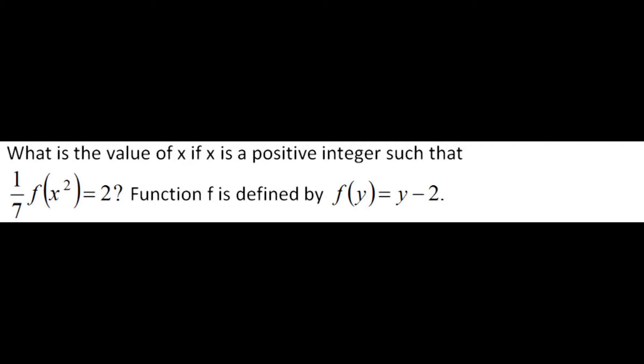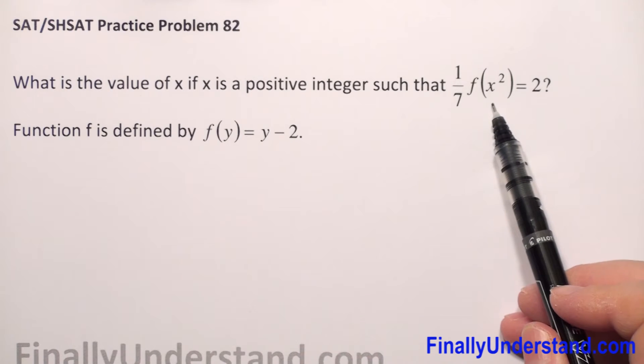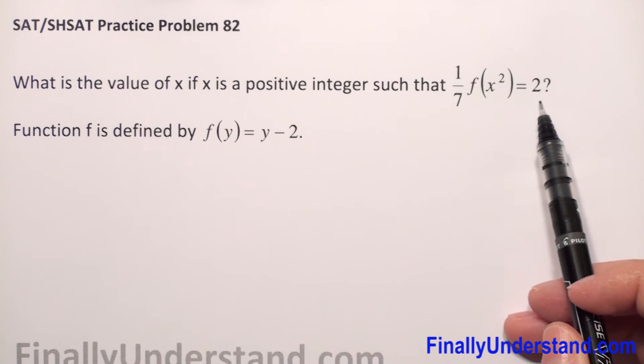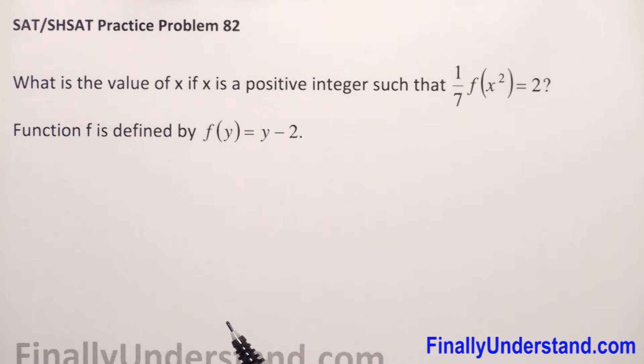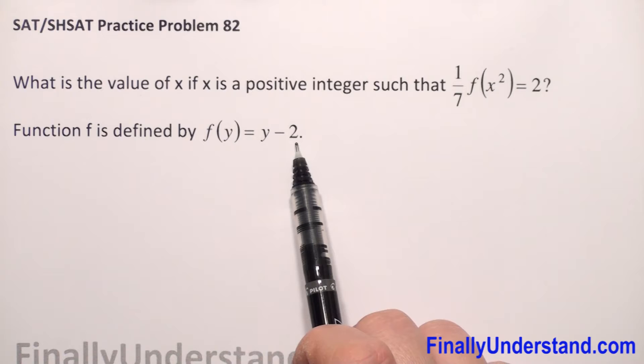What is the value of x if x is a positive integer such that 1 over 7 times f of x squared is equal to 2? Function f is defined by f of y equals y minus 2.